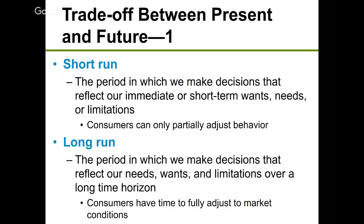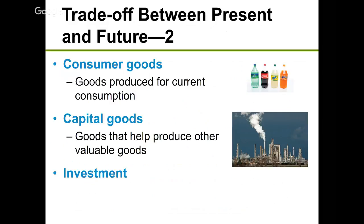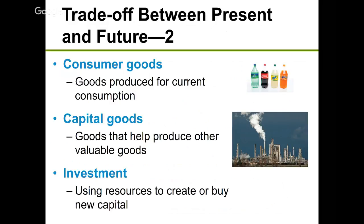In economics, the short run has an immediate payout while the long run has a longer return. The reason we discuss short and long run here is to understand the difference between consumer goods and capital goods. Consumer goods are used for current consumption. Capital goods are used to produce other valuable goods — they're like an investment in the future. Every society faces a choice: produce more consumer goods now, or invest in capital goods to produce more consumer goods in the future.